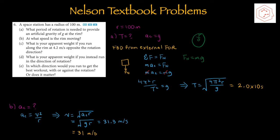Question 6: A space station has a radius of 100 m. Part A: determine the period of rotation required to provide artificial gravity of g at the rim. Centripetal acceleration equals g, solving for period. From the external frame, only normal force acts — letting downwards be positive, net force = m·ac = fn = mg. Mass cancels, ac = g. Plugging in the formula for centripetal acceleration with period — 4π²r/T² — and isolating for T gives a period of 2.0 × 10 seconds. Two sig figs are used since the radius is assumed exact.